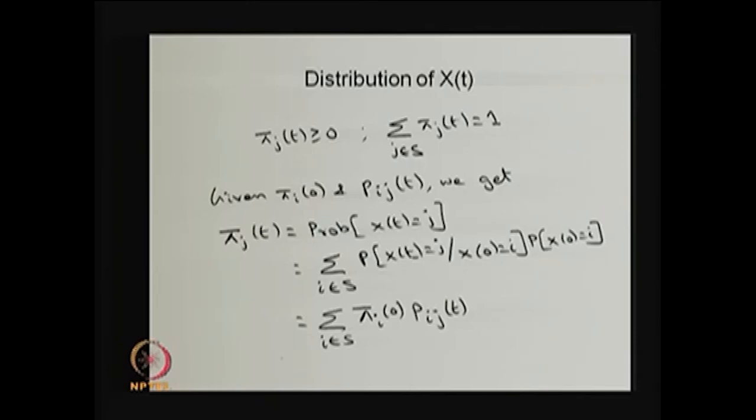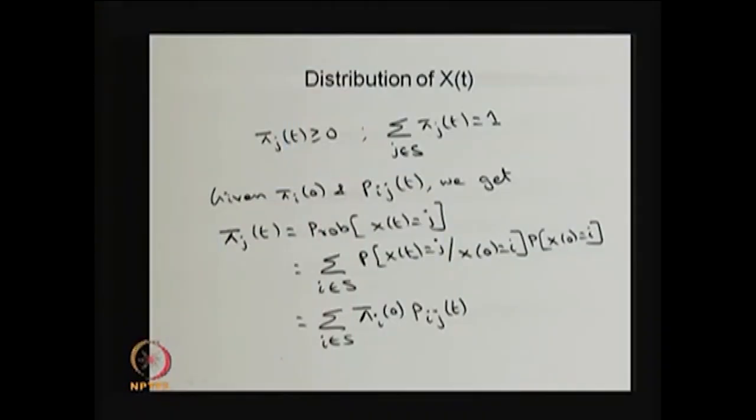In this lecture, I started with the Markov process, discussed the definition of a continuous-time Markov chain, explained the distribution of time spent in any state before moving to another, and introduced the infinitesimal generator matrix. Using the Chapman-Kolmogorov equation, we derived the forward and backward Kolmogorov differential equations. In the next lecture, I will cover a simple example of a continuous-time Markov chain, the stationary limiting distribution, and the steady-state distribution.